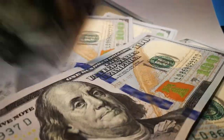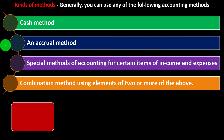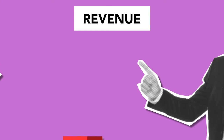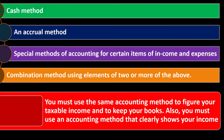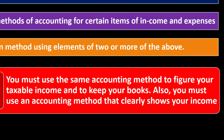You can use elements of both methods and have specific methods for certain things, like revenue recognition for long-term contracts, which can violate the normal revenue recognition principle. The question becomes: when should you recognize revenue if you have a five-year contract and haven't completed the job? You must use the same accounting method to figure your taxable income and to keep your books.